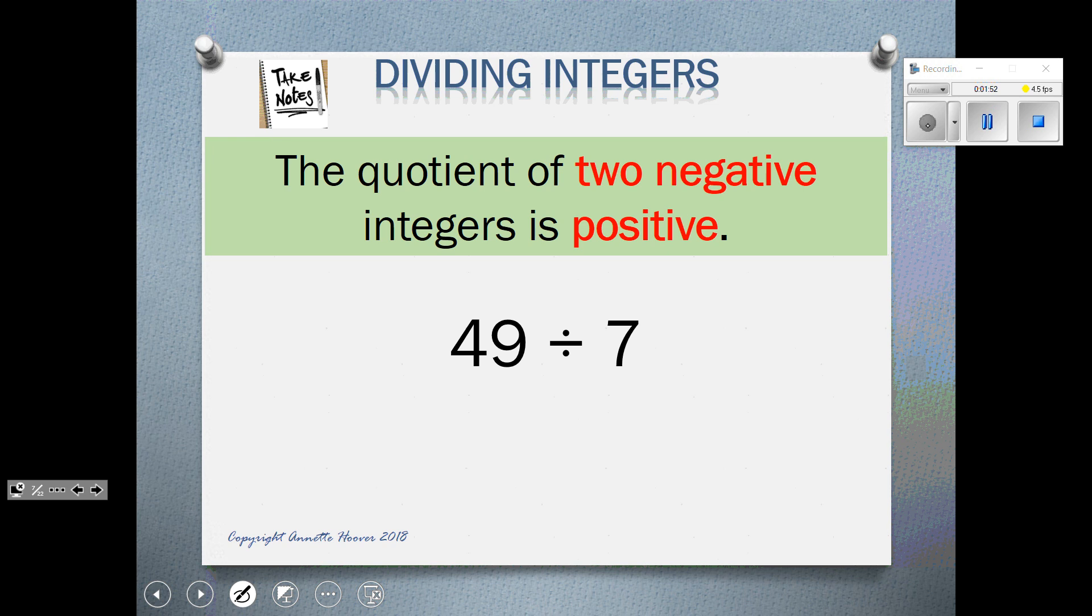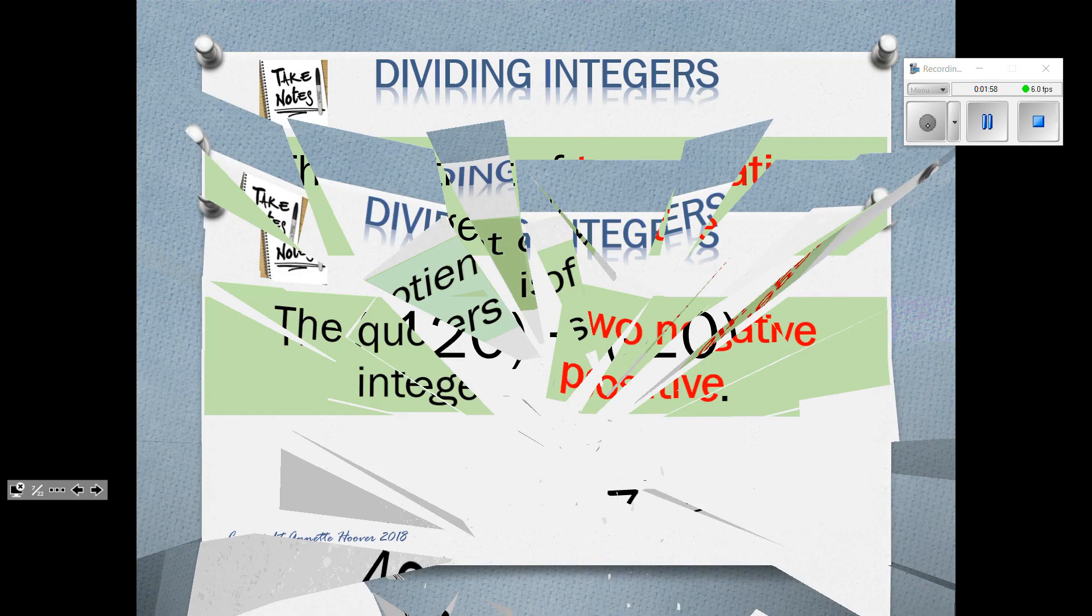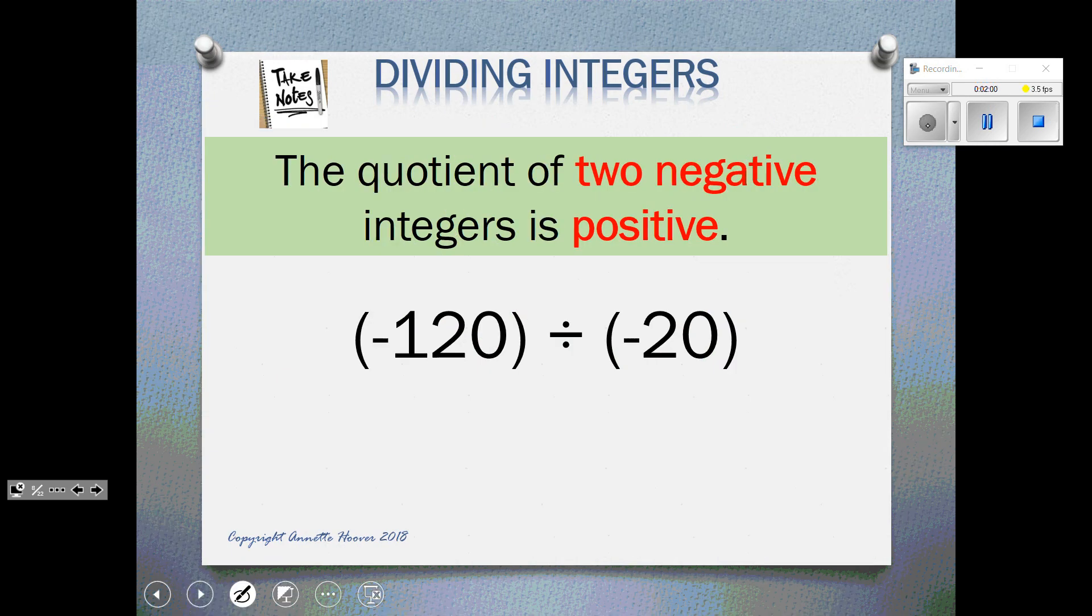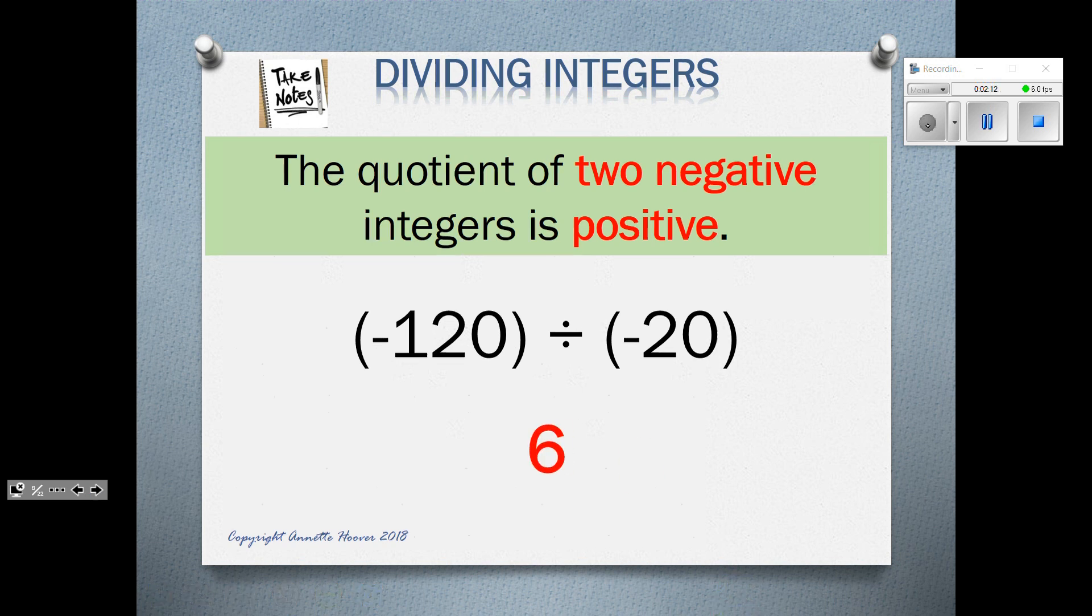Two positives make a positive. 79 divided by 7 is just 7. Here are two negatives, so I mentally think 120 divided by 20 is 6. Two negatives make a positive, so it's a positive 6. So I write 6.